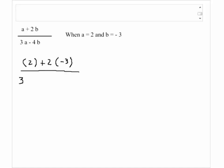You notice I use parentheses for each variable. Here I have 3 times a, a is equal to 2, minus 4 times b, b is equal to minus 3.